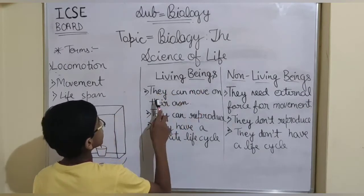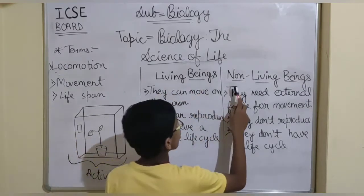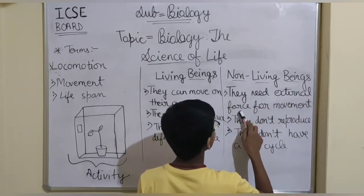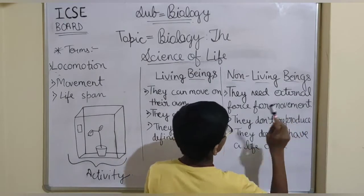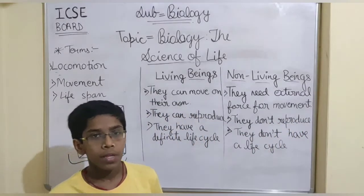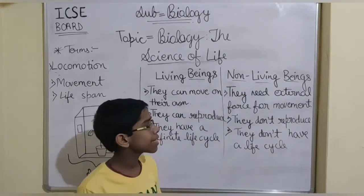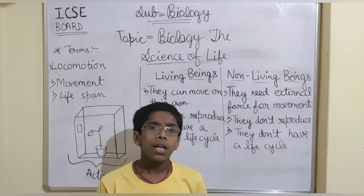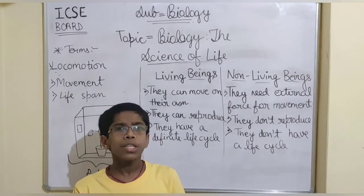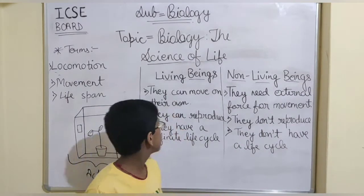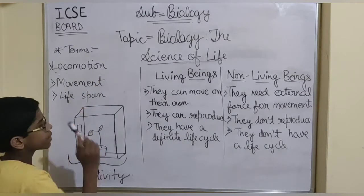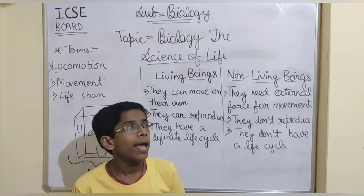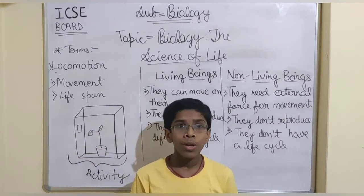Living beings can move on their own. Non-living beings cannot move — they need external force for movement. There is a major difference between two terms: locomotion and movement. All animals can move their different parts of their body, and human beings also.